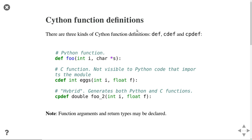The syntax for cdef functions is similar to regular functions — you can specify the types of the input variables. In front of the function name you can also specify the return type. For example, a function X that returns an integer must return an integer. For functions where you want both Python and C accessibility, you can use 'cpdef', and the rest of the syntax is the same.